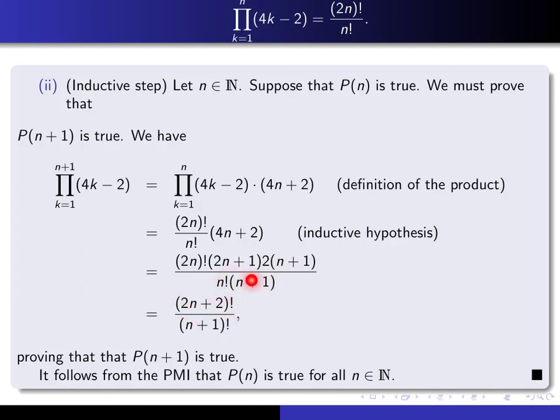The denominator we already forced to be n+1 factorial. And so this is exactly what we wanted to see. This is exactly this thing here in which n is replaced by n+1. And so that proves that P(n+1) is true. We've managed to deduce it from the assumption that P(n) is true. So it follows from principle of mathematical induction that P(n) is true for all natural numbers n.